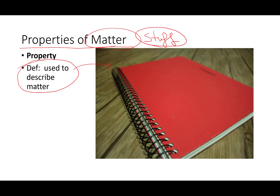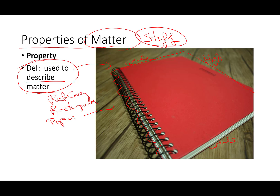If you were going to describe it, words I would use are: it's red, it is rectangular, it is made out of paper, it has a spirally edge to it, it has holes in it, a red cover, and white sheets. You could get quantitative and give the dimensions — how wide and how high it is if you had it in front of you. That's all I mean when I talk about properties of matter — describing it the same way you would describe a car or anything else you're observing.